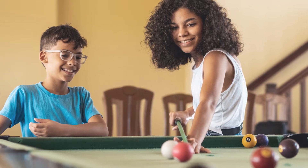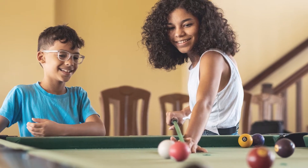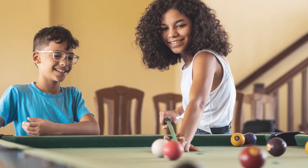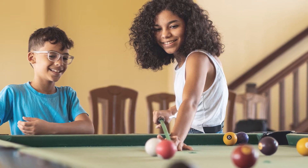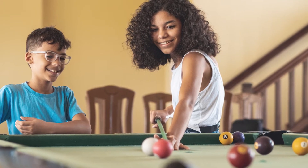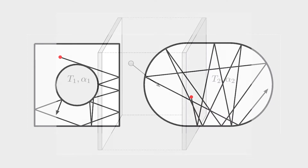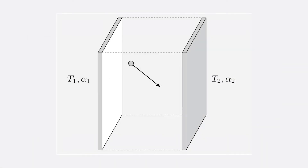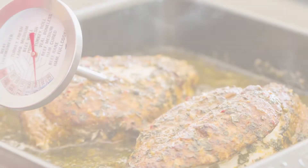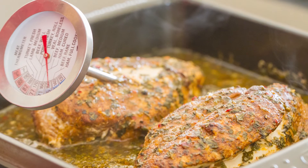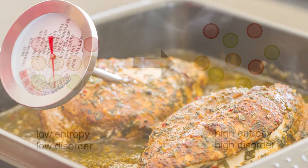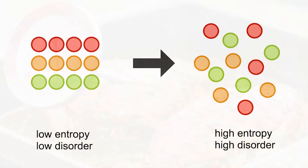If you've ever played billiards or pool, you've used your intuition and some mental geometry to plan your shots. As it turns out, the simple setup of a ball bouncing around in an enclosed region leads to some intricate mathematics, especially when you change the shape of the pool table or add an element of randomness into the mix. Mathematical billiards even have connections to thermodynamics, the branch of physics dealing with heat, temperature, and energy transfer.